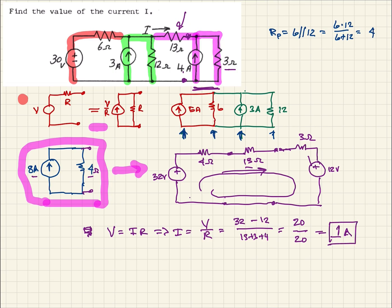So this is the value of the current flowing through there. This current right here flowing through the 13 ohm resistor is 1 amp.